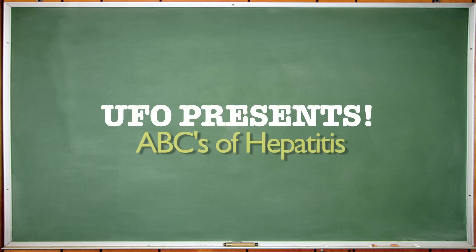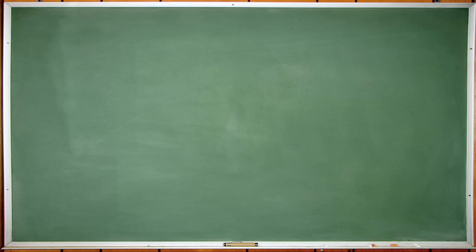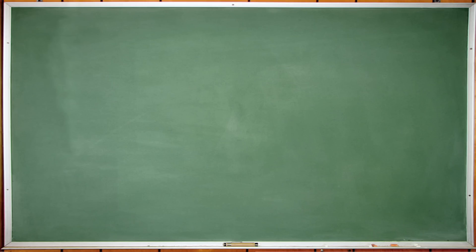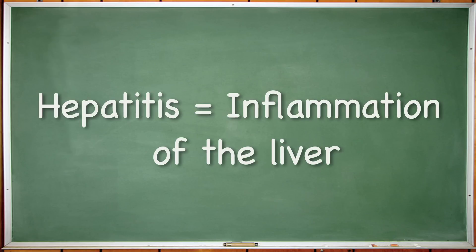This is a short overview of hepatitis A, B, and C and the differences between each. Hepatitis is a virus that affects the liver. Hepa means liver and itis is inflammation. So hepatitis is an inflammation of the liver.